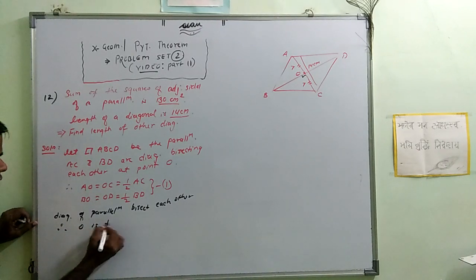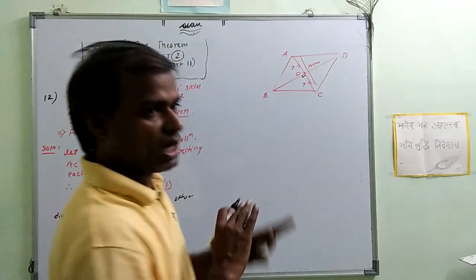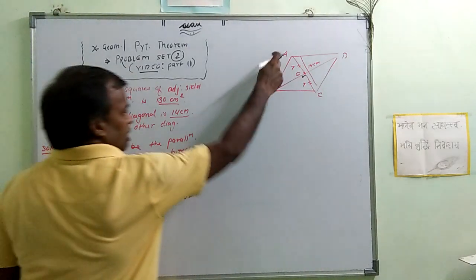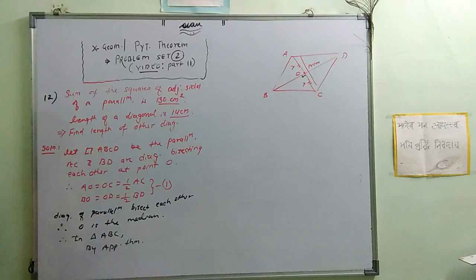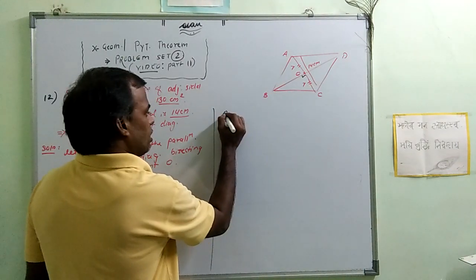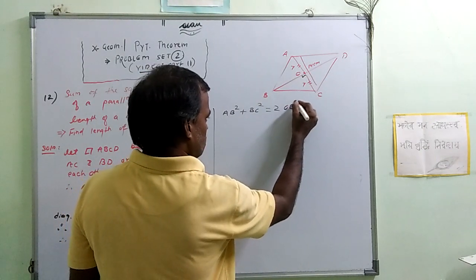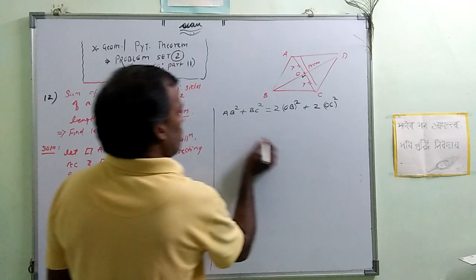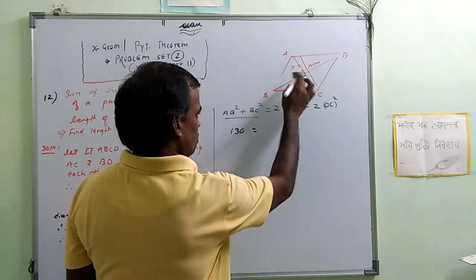Since O is the midpoint of both diagonals, O is like a median point. Therefore in triangle ABC, by Apollonius theorem: AB² plus BC² equals 2·OB² plus 2·OC². The sum of squares of adjacent sides is given as 130. So 130 equals 2·OB² plus 2·OC². OC is 7, so OC² is 49.